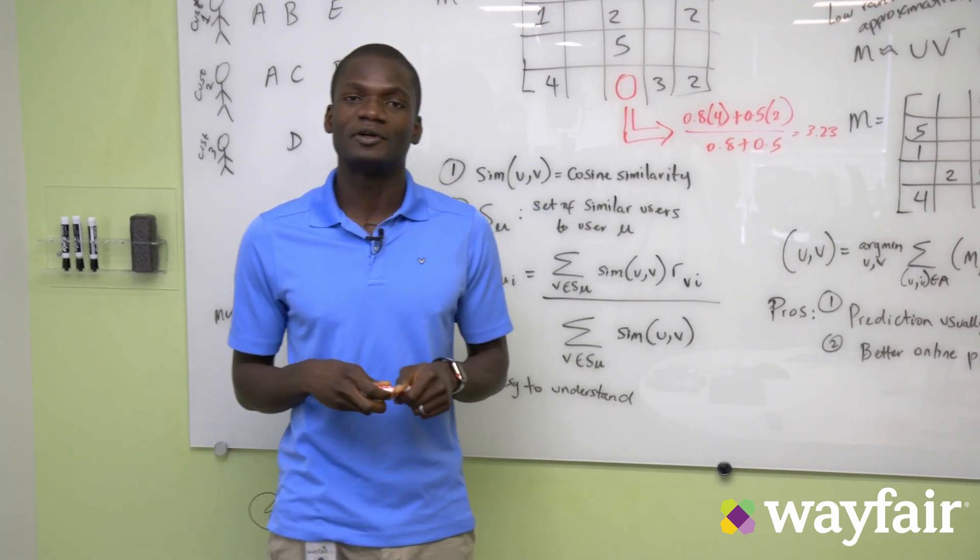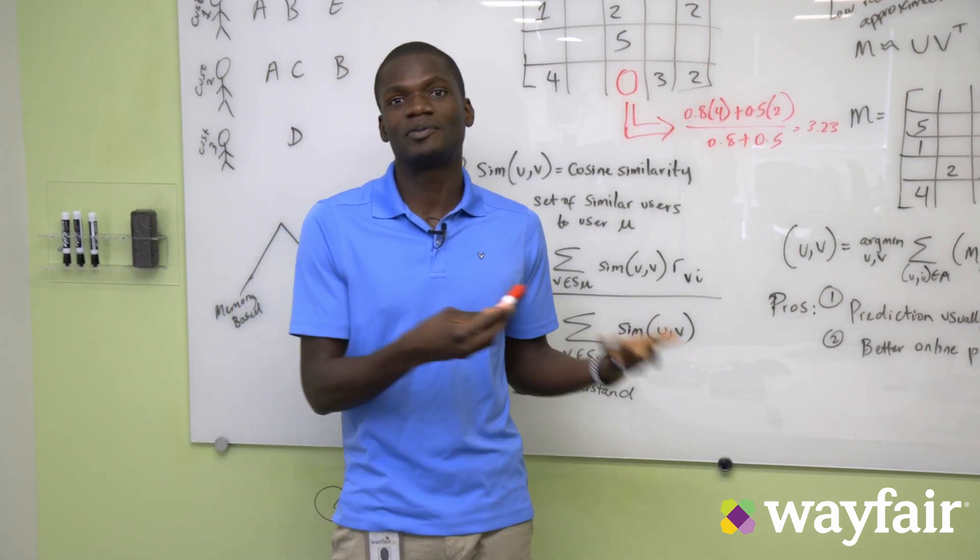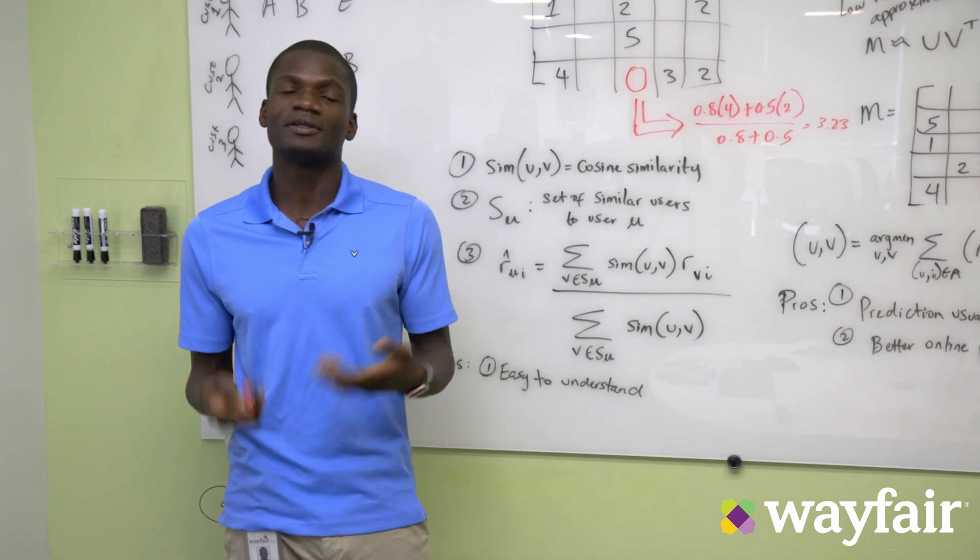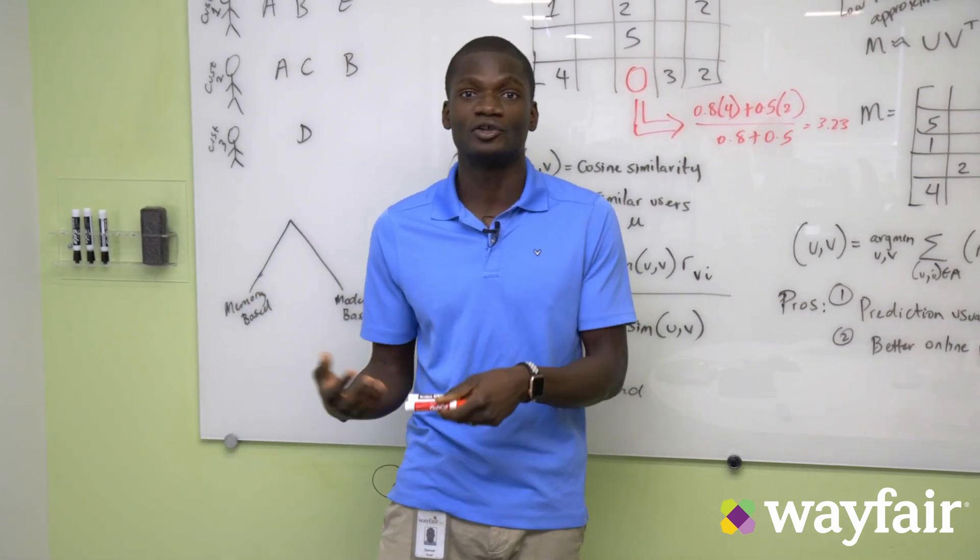The idea behind collaborative filtering is that we are trying to predict a user's preference for an item by using all the feedback we have about that user and the feedback about other users.